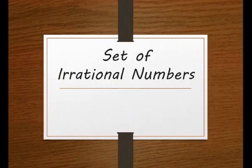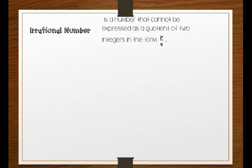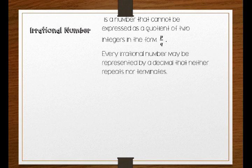Today's lesson is the set of irrational numbers. An irrational number, unlike a rational number, is a number that cannot be expressed as a quotient of two integers in the form P over Q. Also, every irrational number may be represented by a decimal that neither repeats nor terminates.